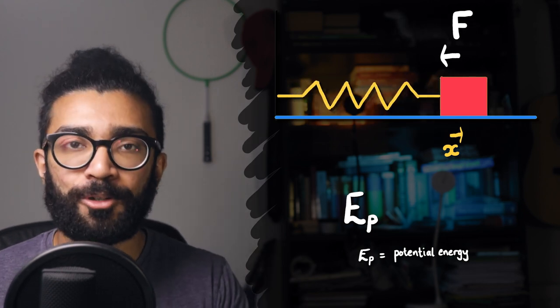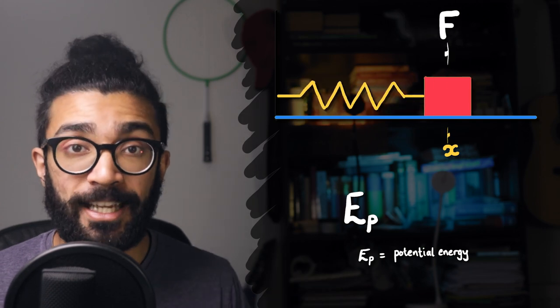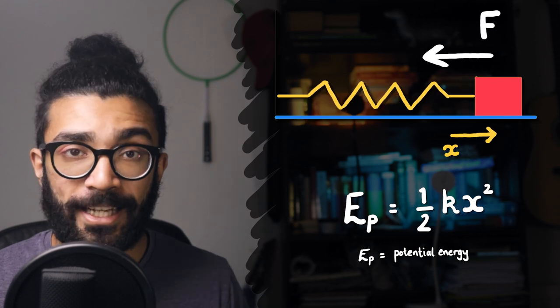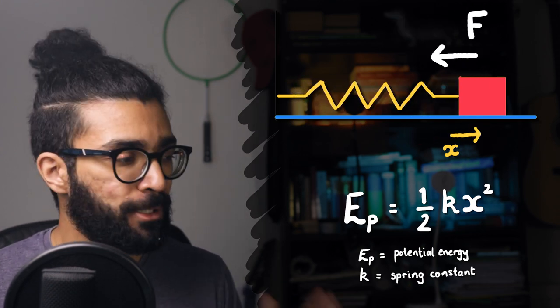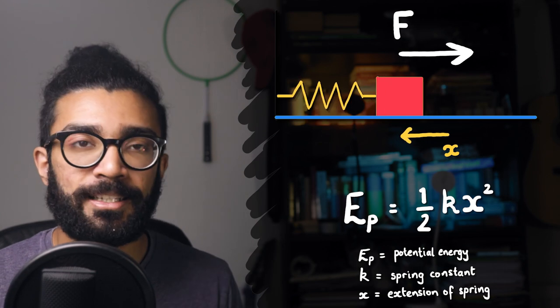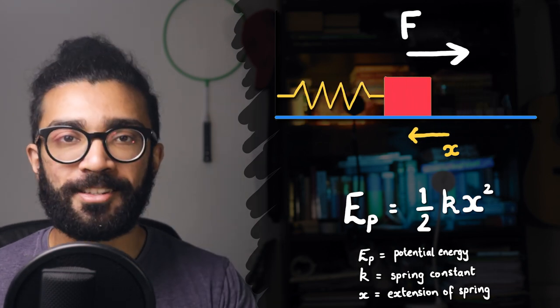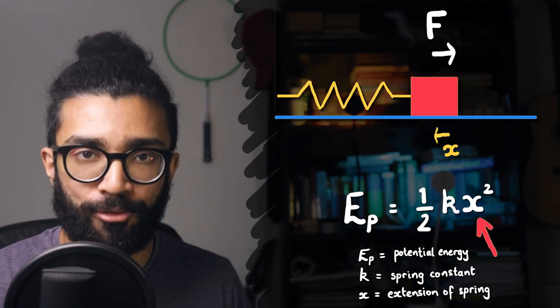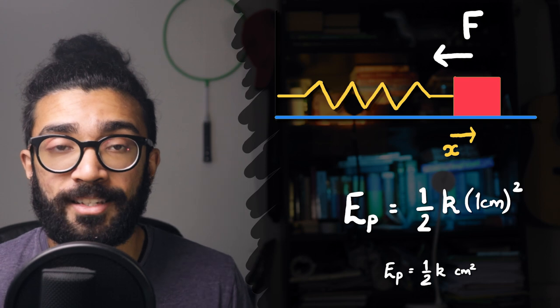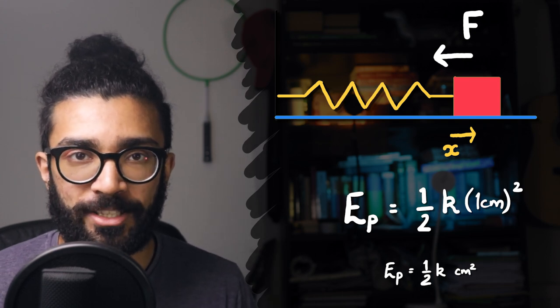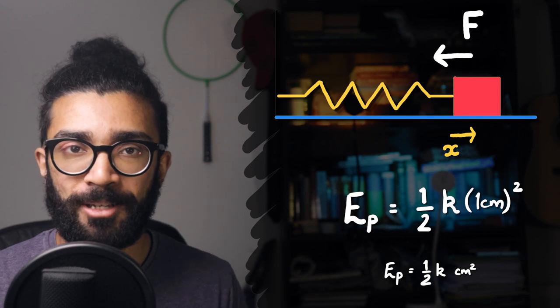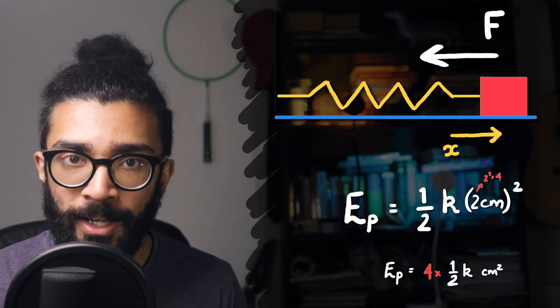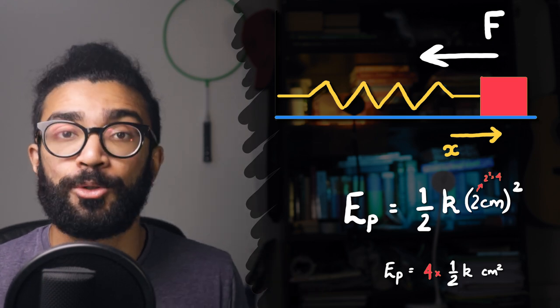If you've studied springs before, you'll recall that for a perfect spring, the potential energy stored in it is equal to half multiplied by k multiplied by x squared, where k is known as the spring constant and is a property of that particular spring, and x is simply the displacement from the equilibrium position. The important thing here is that the potential energy is proportional to x squared, it's quadratic. This means that for x equals one centimeter, for example, the potential energy is equal to half k, whatever k might be, that's not really important. But if we double the displacement, if we say x equals two, then the potential energy is four times larger, that's two squared.